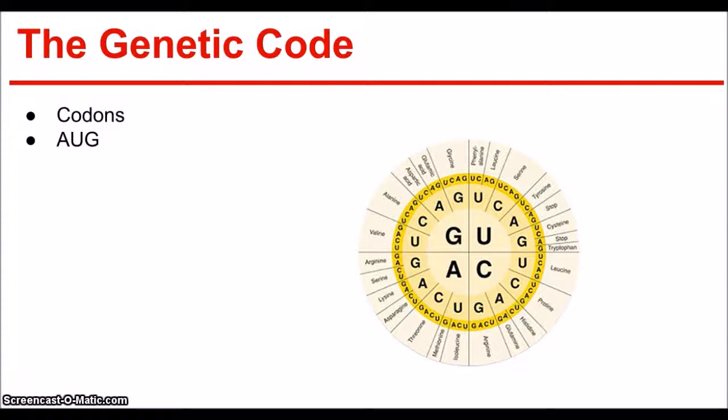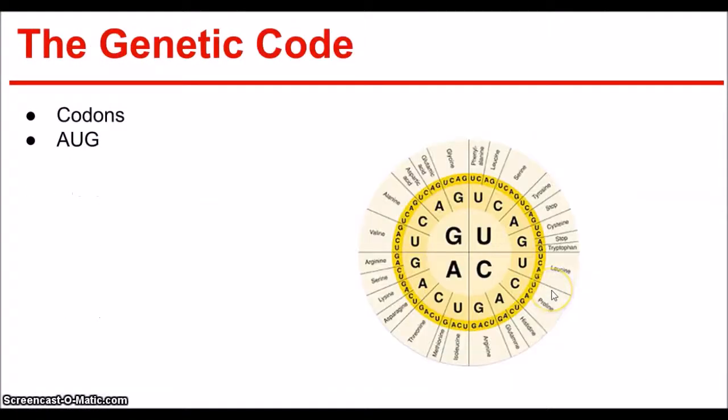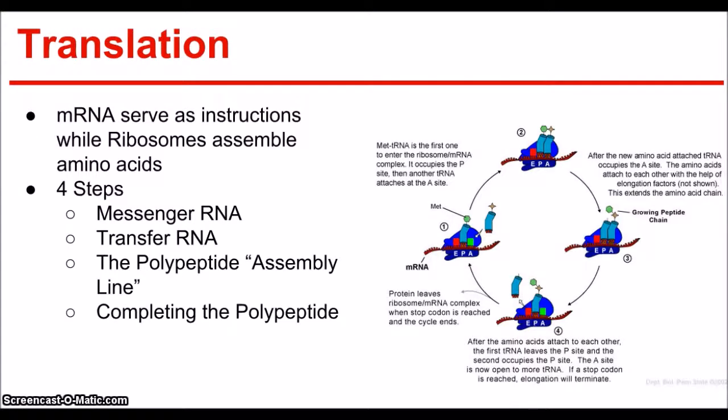Here we can see a chart of the genetic code. Each letter, each combination corresponds to a protein. And you can see that there are a lot of combinations that code to the same protein. And that's part of the, it's almost a defense mechanism against mutations.